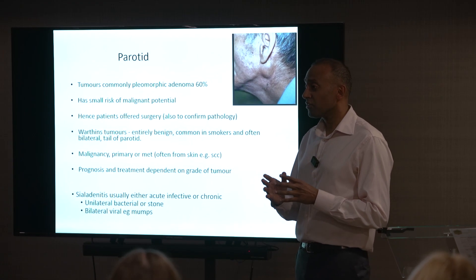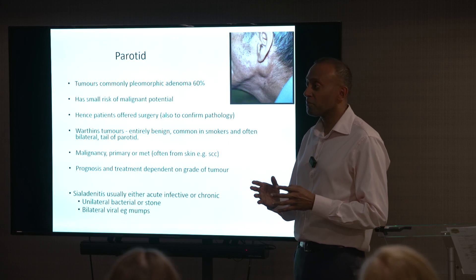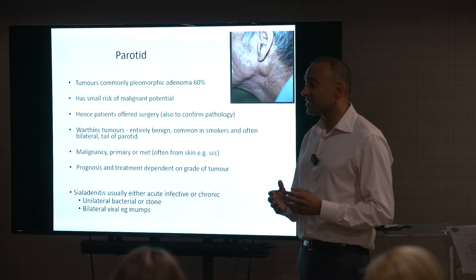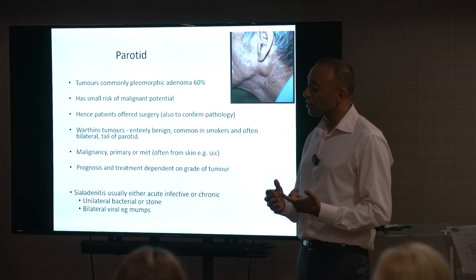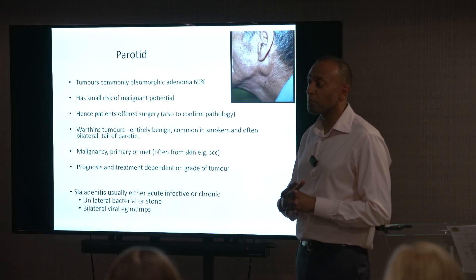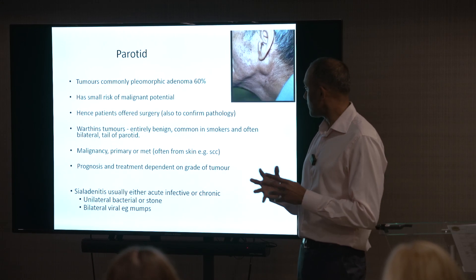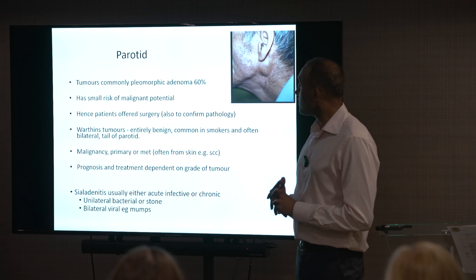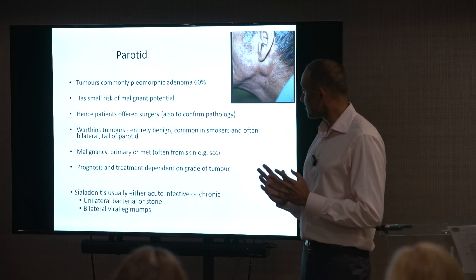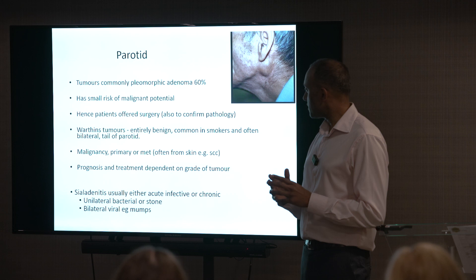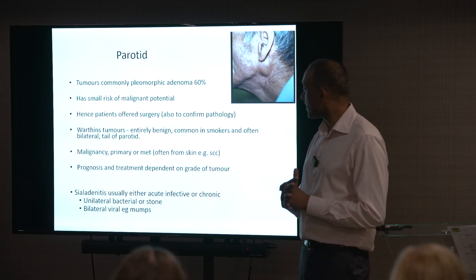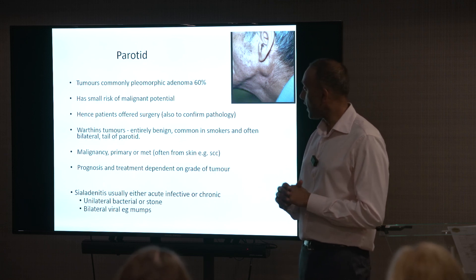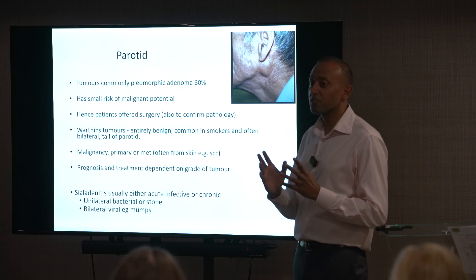Warthin's tumours can usually be managed conservatively. So if you have ultrasound and FNA which confirms Warthin's, you can often manage that conservatively. Malignancy may be either a primary parotid tumour — which can be low-grade or high-grade — or metastases to the parotid from skin or from another area. In terms of diffuse swellings, you're really looking at sialadenitis, which could be acute infective or chronic. Stones are more common in the submandibular gland. And if it's a bilateral swelling, that can be a viral infection such as mumps.